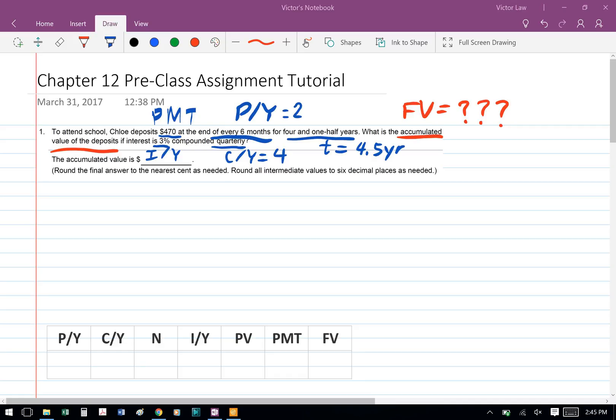Our interest is 3%, so our nominal interest is 3%, I/Y equals 3. Compounded quarterly, so compounding per year equals 4. In this question, we're solving for accumulated value of the deposit, so we're solving for future value.